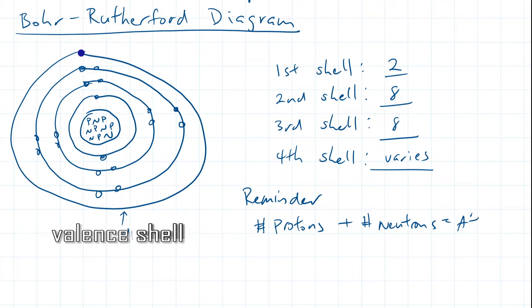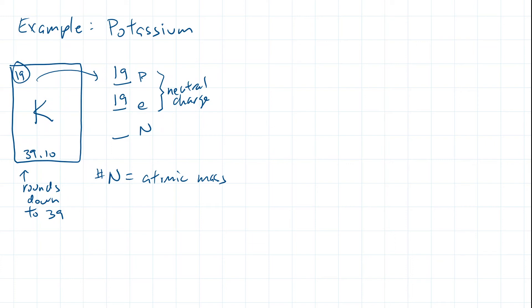Let's work on some Bohr-Rutherford examples together. We will assume that the elements are neutrally charged, so they will share the same number of protons as electrons. Potassium is element number 19. It has an atomic mass of 39.1 rounded down to 39. Since the element number is 19, there are 19 protons and 19 electrons to make it neutral. Since the number of neutrons is equal to the atomic mass minus the atomic number, 39 minus 19 equals 20 neutrons. Therefore, the nucleus of potassium contains 19 protons and 20 neutrons.